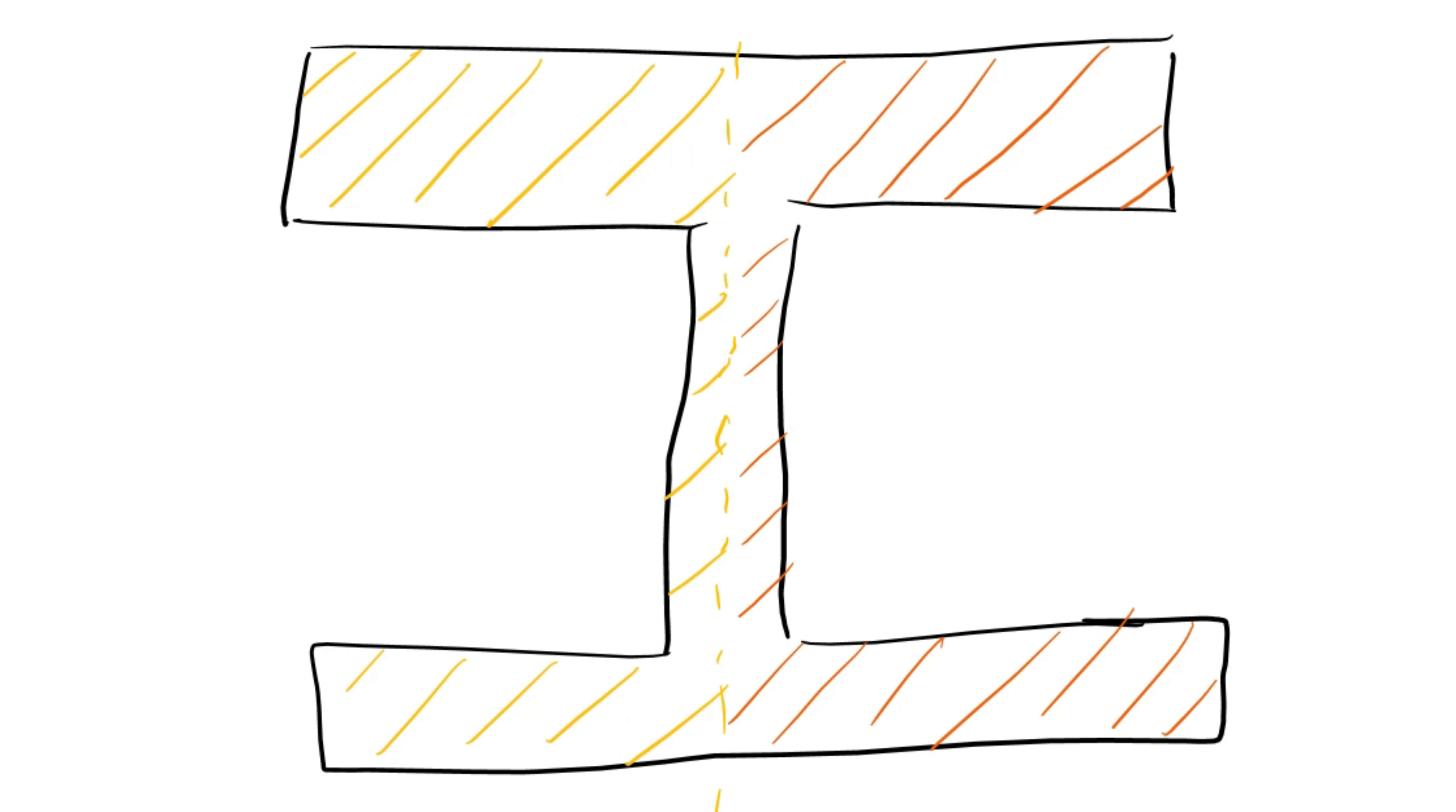We assume that the compressive load in the columns is applied on the centroid of the section. The centroid of any homogeneous isotropic section can be found by equally splitting the left and right areas of the section with a vertical line, and the top and the bottom areas with a horizontal line. The intersection of those lines is the centroid.